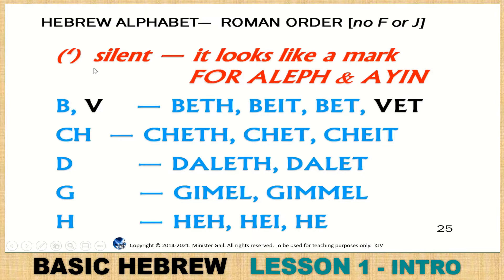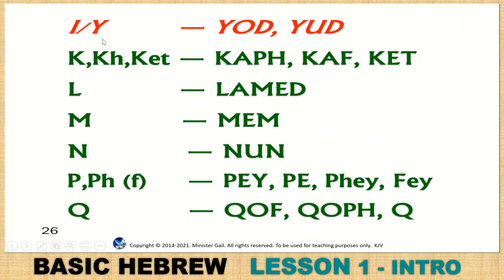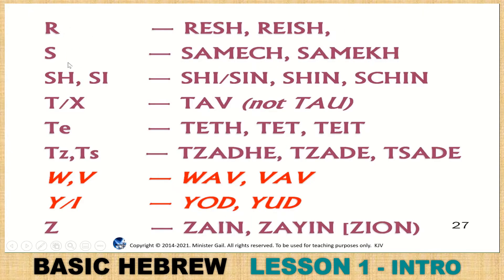Remember this is a silent marking — it is just a mark for Aleph and Ayin. In order, the first letter is Aleph but it will only be a mark. Then B-C-H, D-G-H, I-Y, K-L-M-N-P-Q-R-S-SH. Then you have V, W, Y, I, and Z — that is the Roman and Greek order of the alphabet, not the Hebrew order. Notice there is no J.